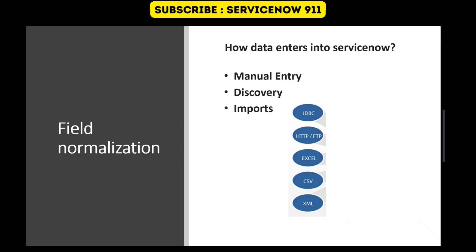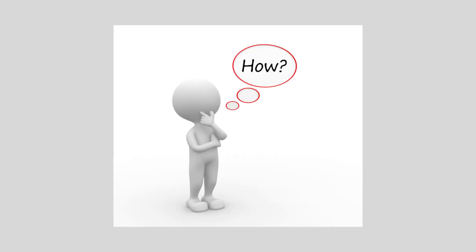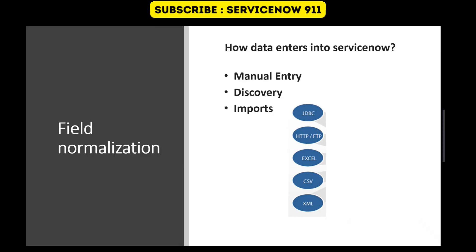So what is field normalization? As the name suggests, it means it streamlines and integrates the data which is coming into the field. But how? So the ways we enter data into ServiceNow: the very first one is manual entry, when you write something on the form directly. It is coming via discovery from different sources, or you can import it using JDBC, SFTP, Excel, CSV, and XML.